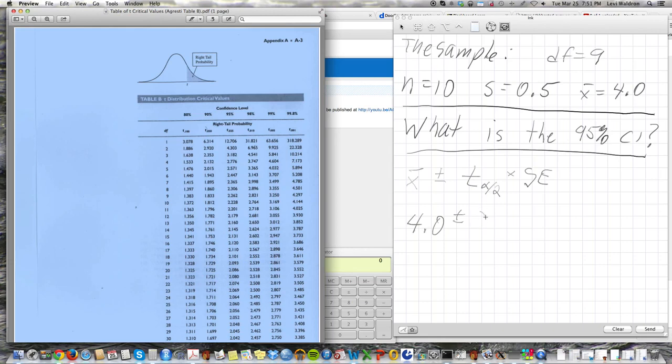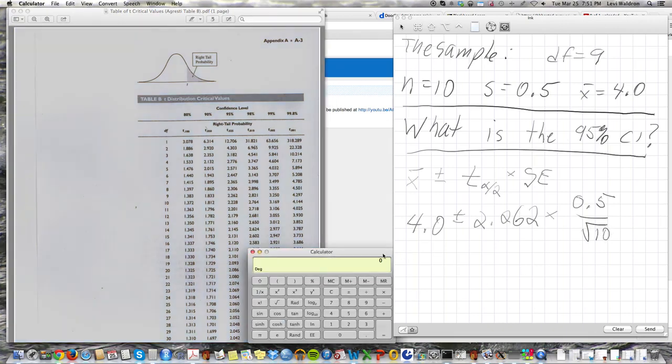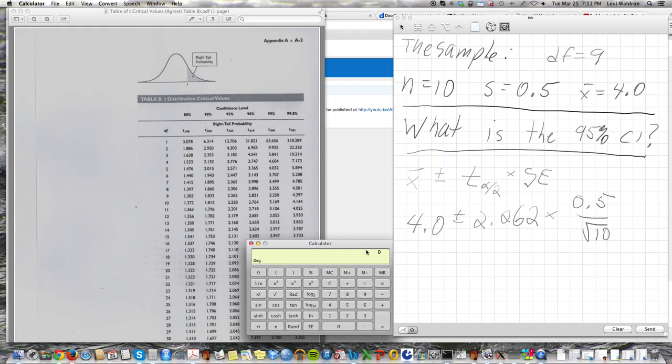So, 2.262 times the standard error, and the standard error is the standard deviation, 0.5 divided by the square root of 10. So I'm going to do this in a calculator. First, the standard error is 0.5 divided by 10, and hit the square root button. So that's 0.158.